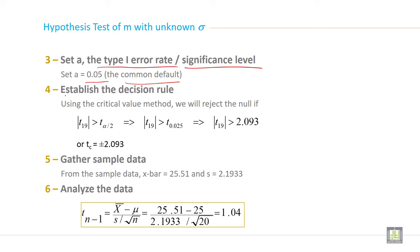Then establish the decision rule. This is the fourth step. How can you establish the decision rule? Using the critical value method, we will reject the null hypothesis.